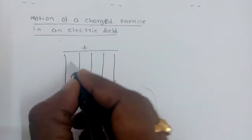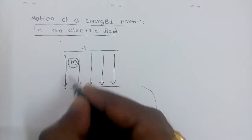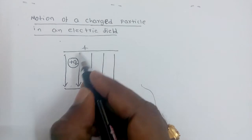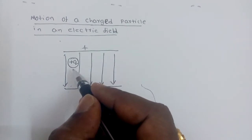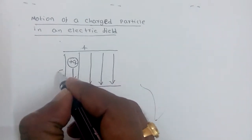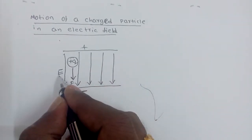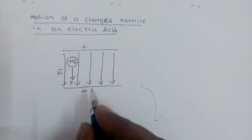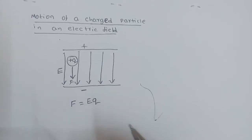The first case is if the charged particle is placed at rest in a uniform electric field. On this positively charged particle, the positive plate applies a repulsion force and the negative plate applies an attraction force. Hence, the resultant force will be towards the negative plate — that means the field applies the force in the field direction. The force on the charged particle is equal to field intensity E into electric charge q.